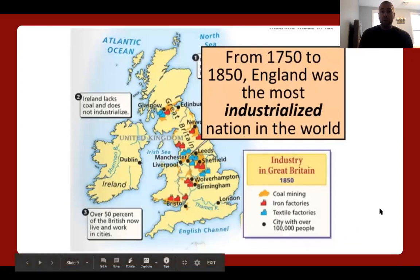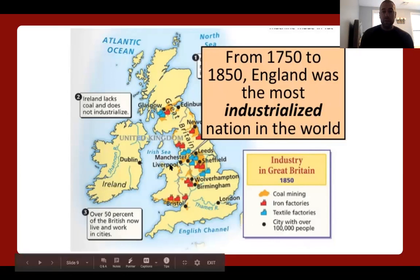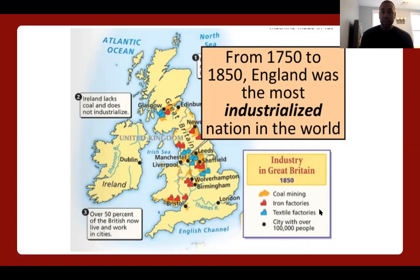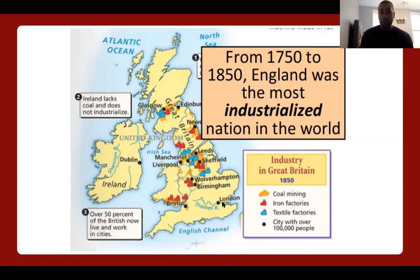Looking at a map here of Britain from 1750 to 1850, England was the most industrialized nation in the world. We're not going to get to the point in this class where the Americans are the most industrialized nation in the world, but they sure do hop on the fast track. All of the industrialization happening in Great Britain really does inspire the American Industrial Revolution, which happens a little later — you'll learn about that next year. On this map of Great Britain you can see the coal mines, the iron factories, the textile factories, and cities with over 100,000 people. They're all pretty close to water.